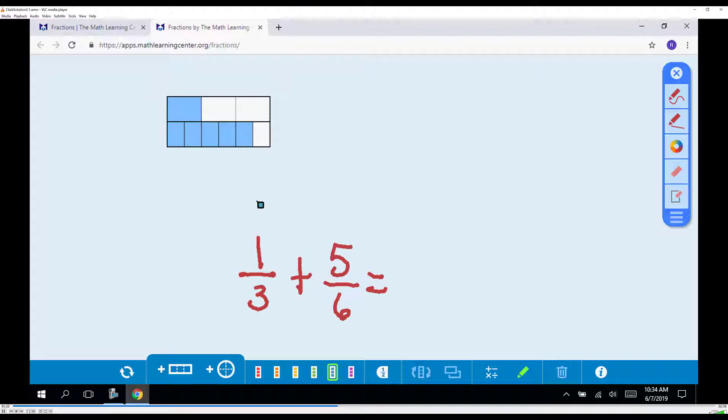I can see that one-third is the same as two-sixths. So, I will rename one-third as two-sixths. Two to represent two-sixths, which is the same as one-third. I will now show five-sixths.